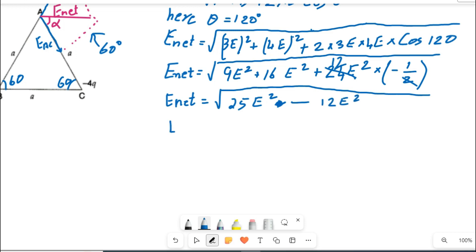So the difference between these two: E_net equals square root of 25 minus 12, so 13, yeah 13E square. This E square we can take outside the bracket now. So it equals E into square root 13.